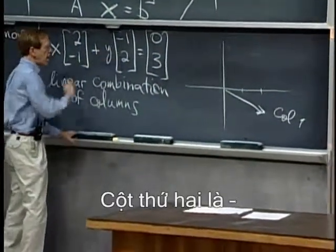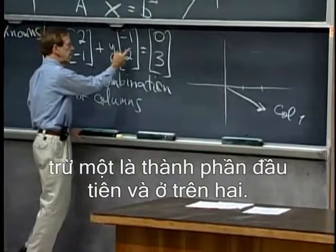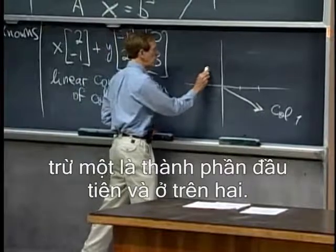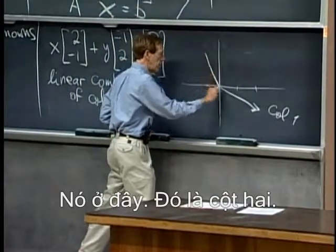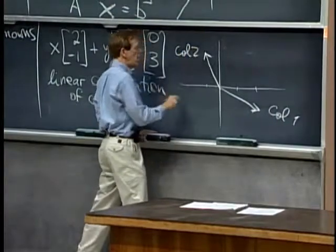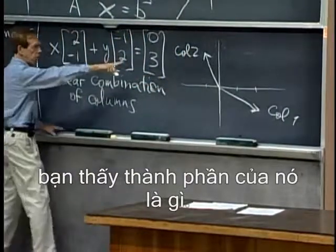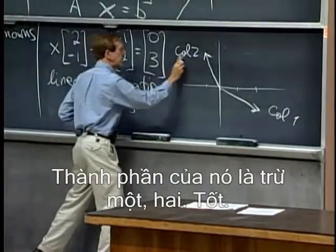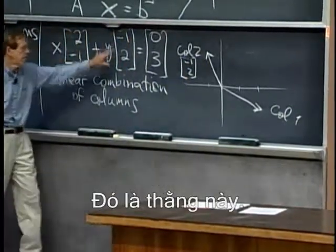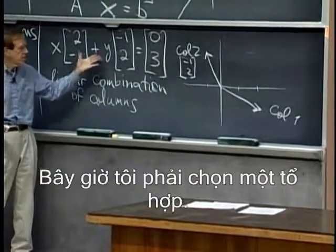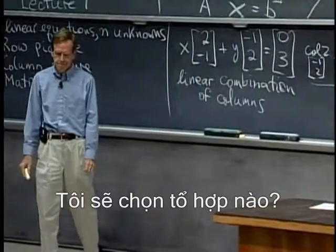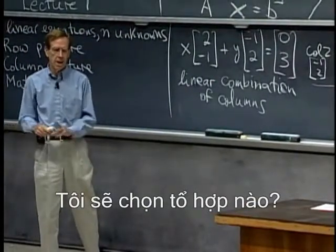The second column: I go over minus one as the first component and up two — it's here. There's column two. Its components are minus one, two. Now I have to take a combination — what combination shall I take?